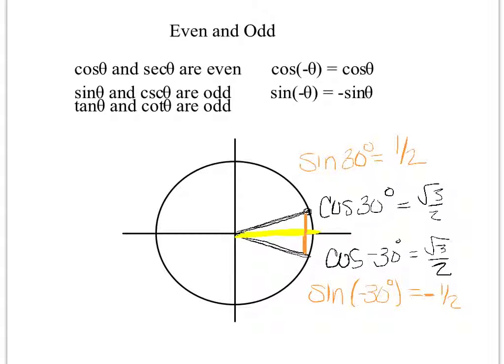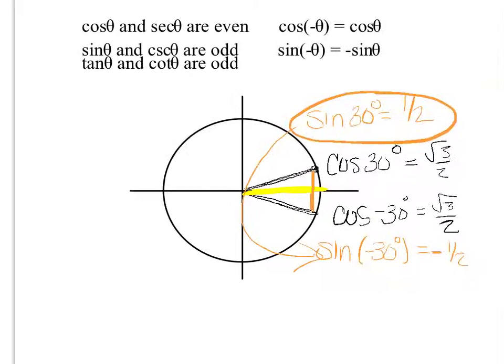So if you're looking at sine, if you had sine of 30 degrees, you know that the sine of negative 30 degrees would be the exact same answer, only negative. So you continue on thinking about that.